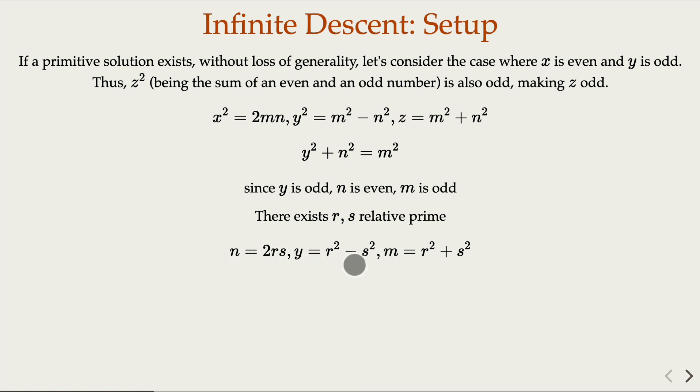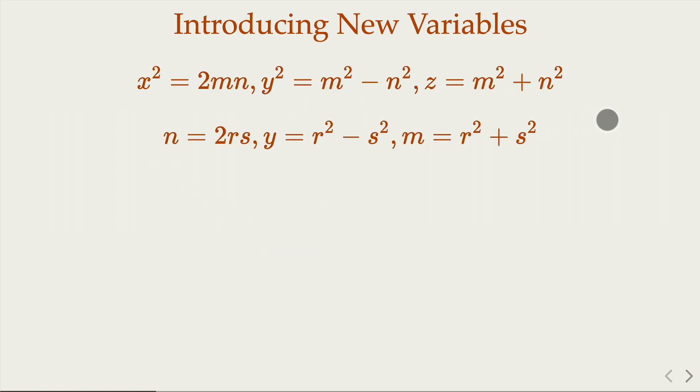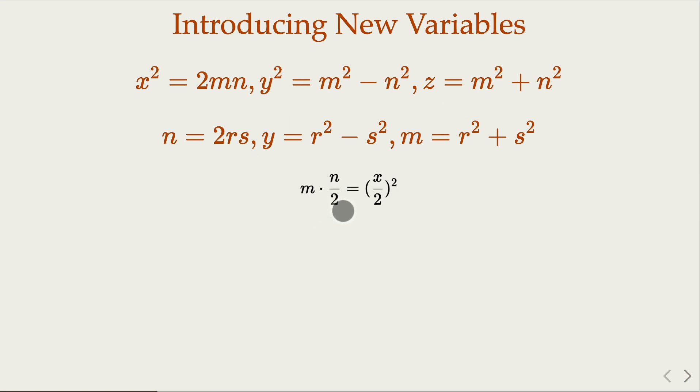So that's again using the property of Pythagorean triples. Let's rewrite what we have so far. The x, y, z was the triple of the original solution. m and n over 2 are relatively prime.